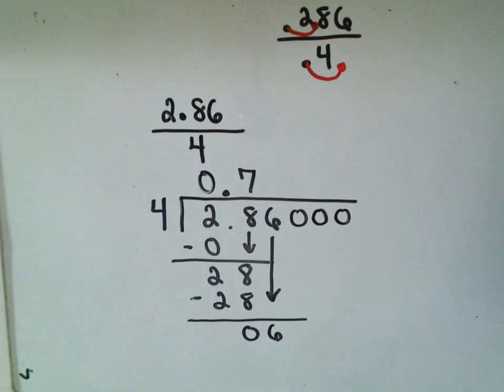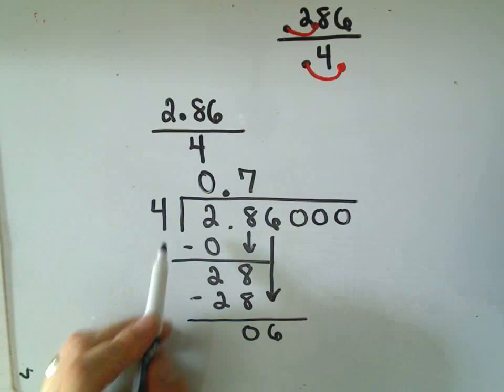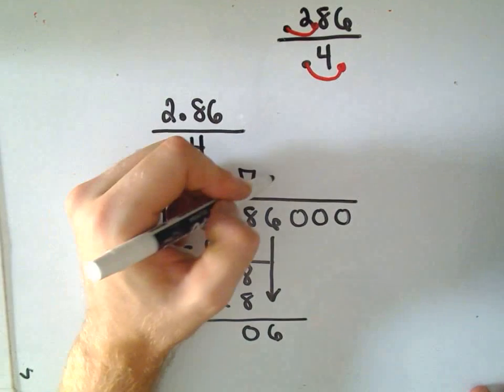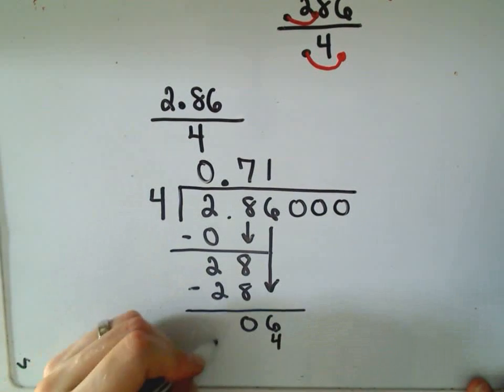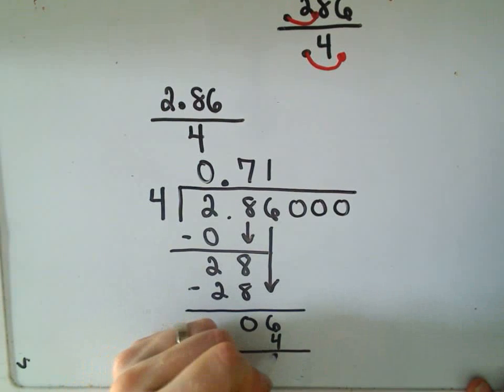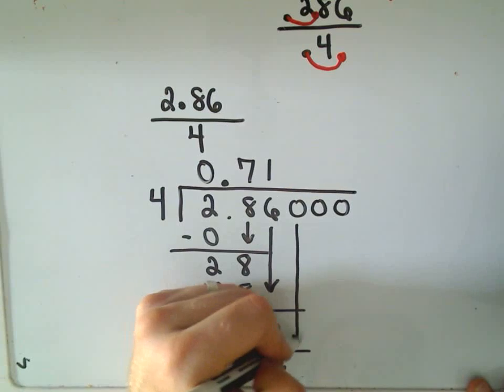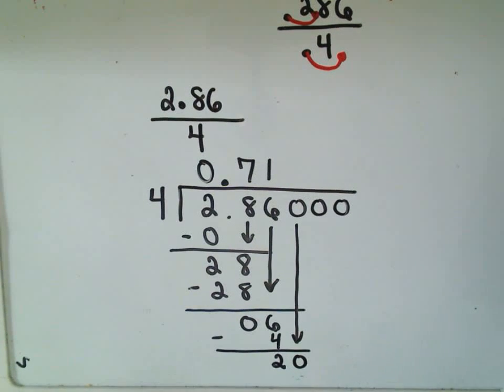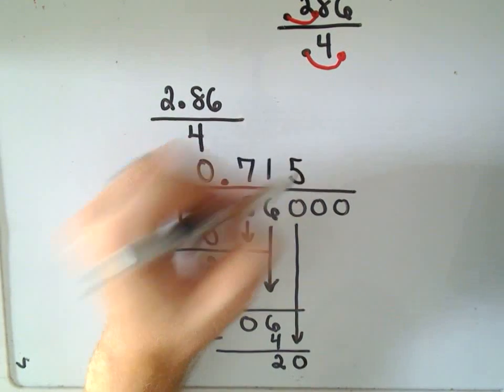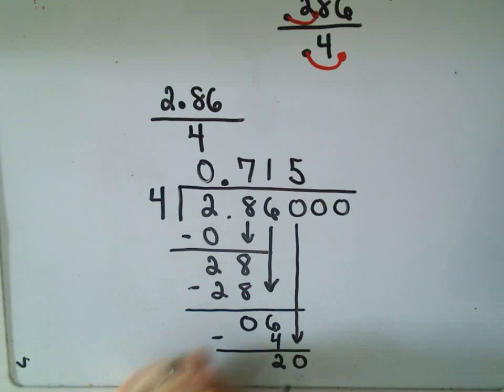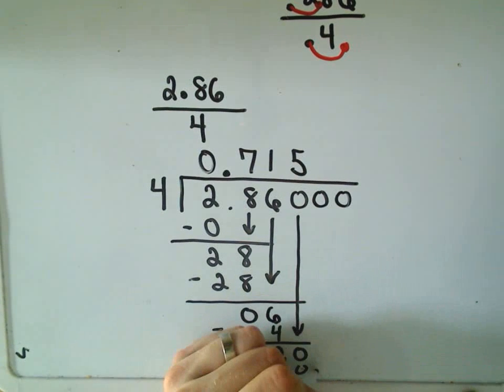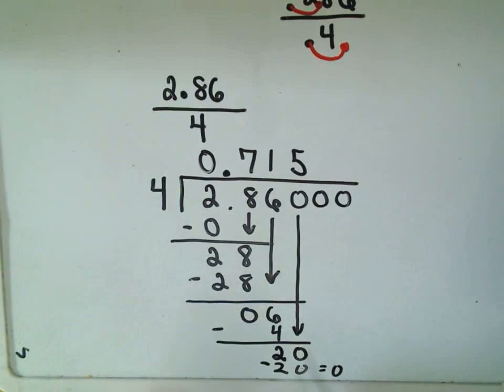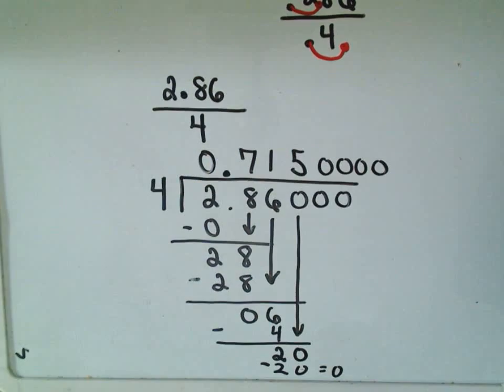So I think 4 will go into 6 how many times? Just one time. 1 times 4 is simply 4. If we subtract, 6 minus 4 is going to be 2. Let's drop down our next 0. I think we're there at this point. So I think 4 times what is 20? That's going to be something exact. 4 times 5 is 20. So I'm running out of room down here. But if we multiply and we subtract away our 20, we're simply going to get 0s. And 4 will go into 0s, 0 times. So after that, you would just start getting a bunch of 0s.